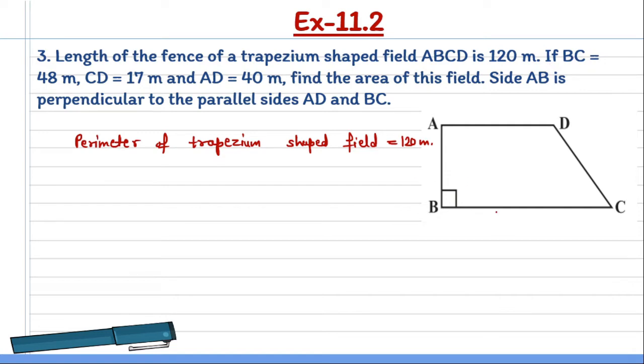Now, if BC is equal to 48 meters, CD is 17 meters, and AD is 40 meters, you have to find the area of this field. And side AB is perpendicular to the parallel sides AD and BC. AD and BC are parallel sides, and AB is perpendicular, making a 90 degree angle.